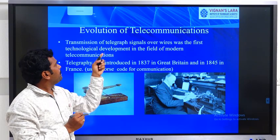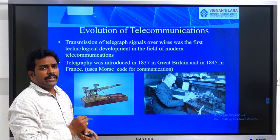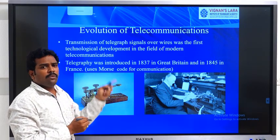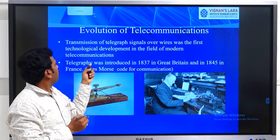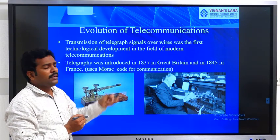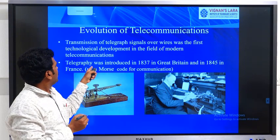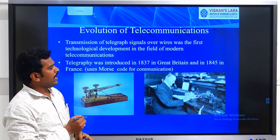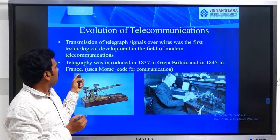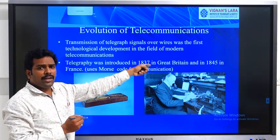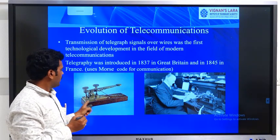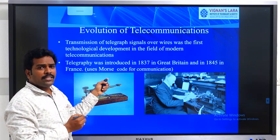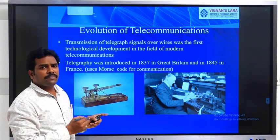Now we see how telecommunication evolved. The first development was the transmission of telegraph signals over wires. It was introduced in the year 1837 in Great Britain and in 1845 in France. To transmit these telegraph signals, it uses a telegraph, and the signals are transmitted with the help of Morse codes.